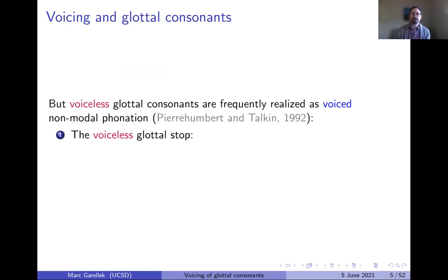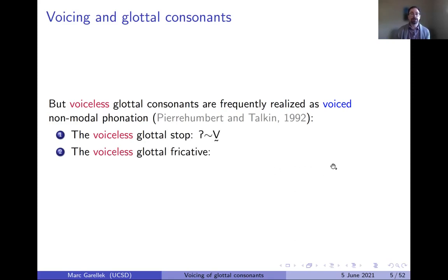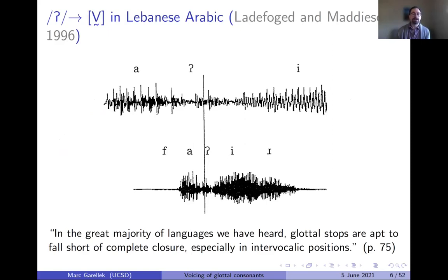Voiceless glottal consonants are frequently realized as voiced sounds. When realized as voiced, especially adjacent to a vowel, they'll be realized as a non-modal, breathy, or creaky vowel. For example, the voiceless glottal stop is known to vary freely between a voiceless glottal stop and a creaky vowel when adjacent to another vowel. We see an example from Lebanese Arabic of an intervocalic glottal stop realized as a creaky vowel transition between A and E.